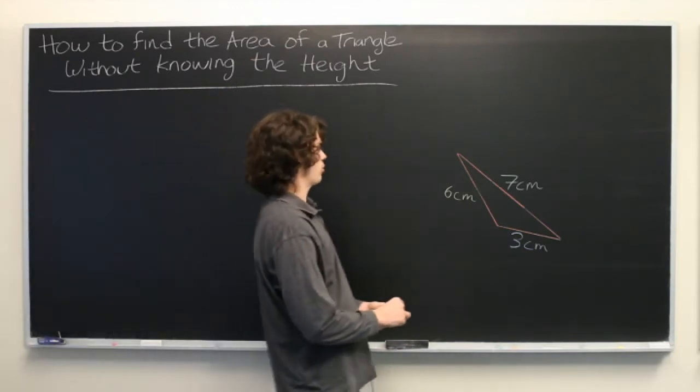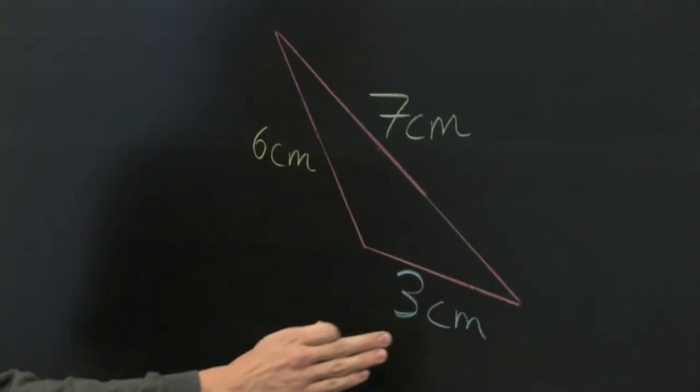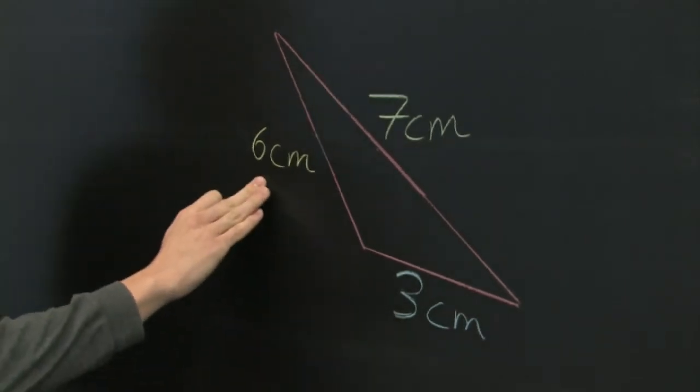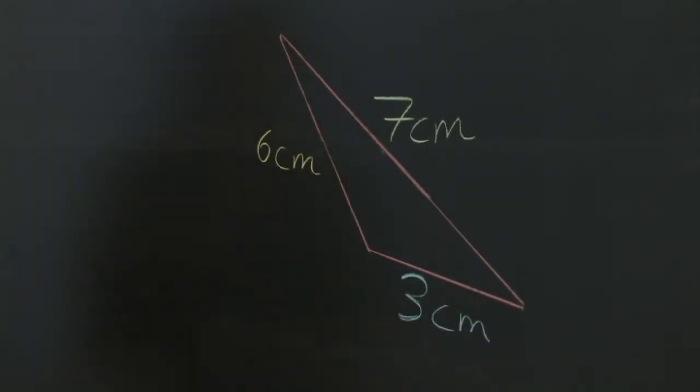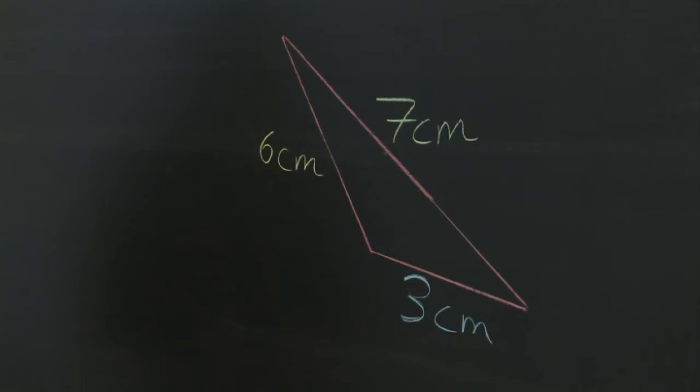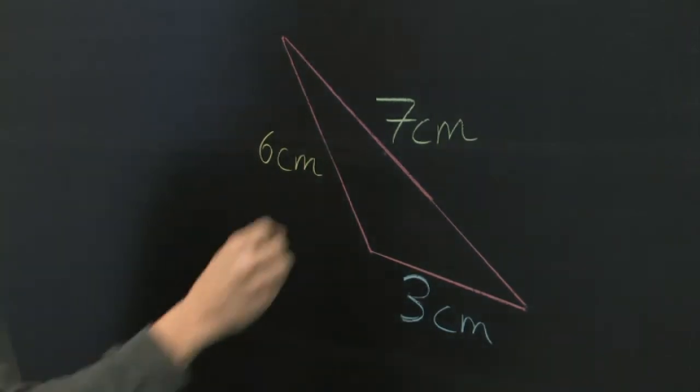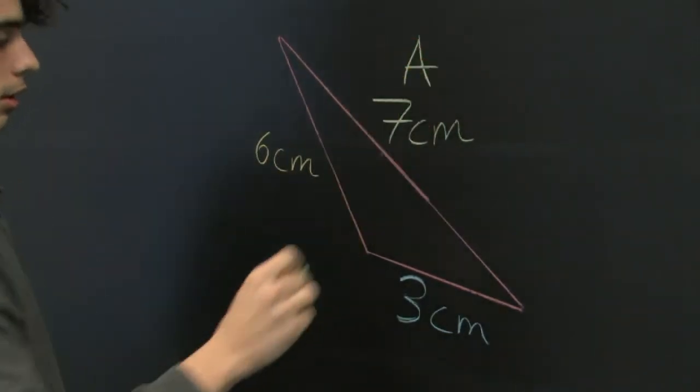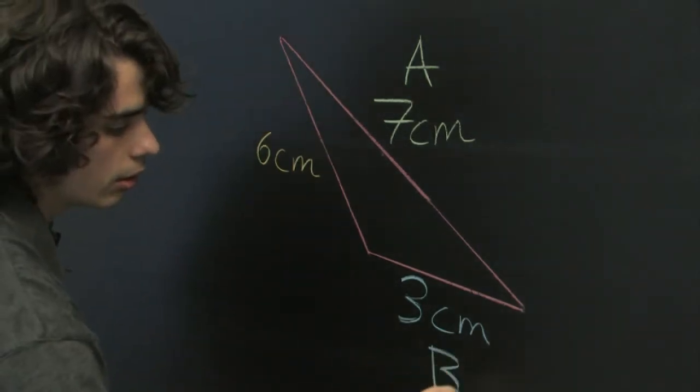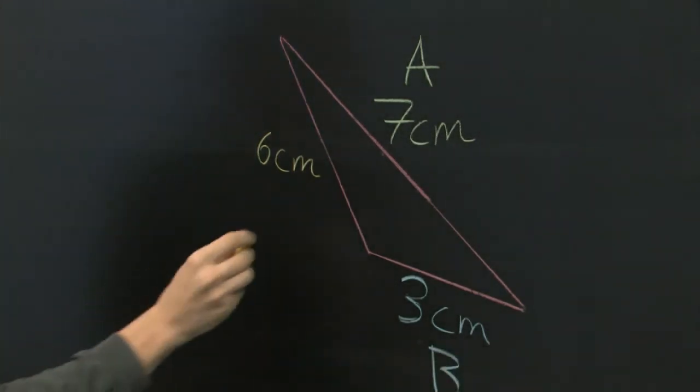So here we have a triangle that has side lengths 3 centimeters, 6 centimeters, and 7 centimeters. We're going to label these sides. We'll say that this is A, the blue side is B, and the yellow side is C.